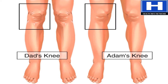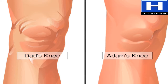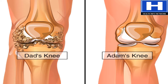Osteoarthritis is the most common form of arthritis and is associated with the aging process. Even from the outside, you can see that the knee of an older person looks considerably different than that of a younger person. Let's take a look at the joint itself to see the differences.